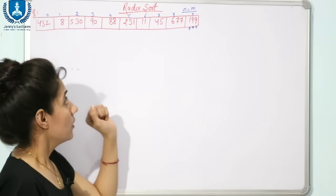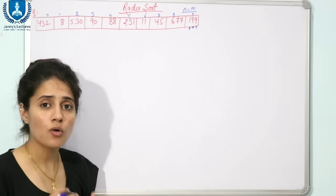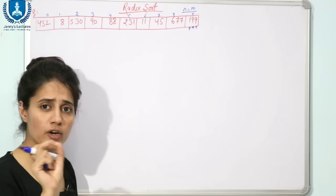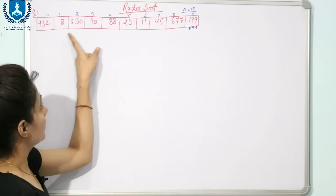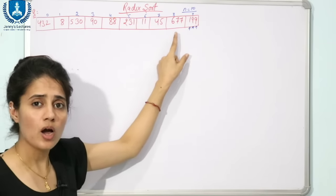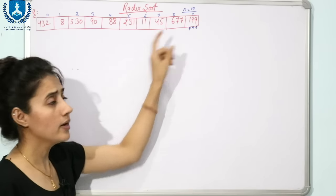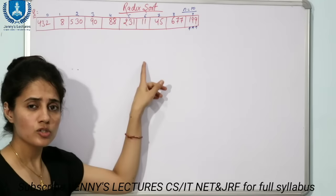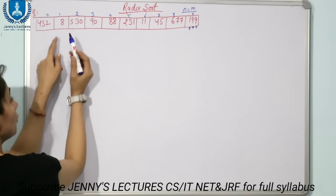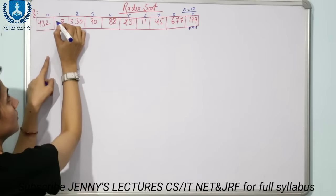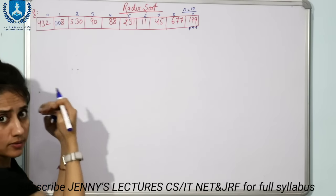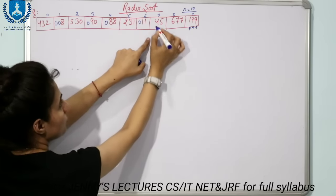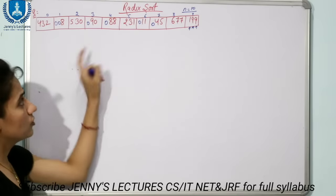First, you need to determine how many times Counting Sort will be applied. To do this, find the maximum element in the array. The maximum is 677, and it has three digits — so Counting Sort will be applied three times. Now, make all numbers three-digit numbers by adding leading zeros where needed, for example adding two zeros to the left. Now all numbers are three-digit numbers.